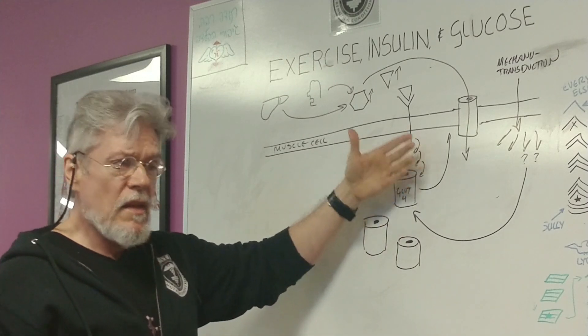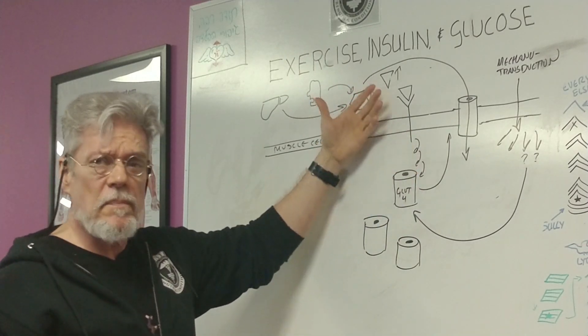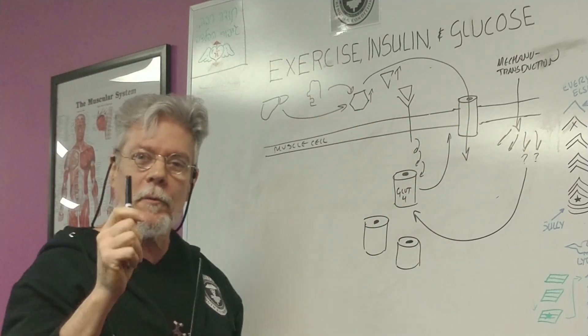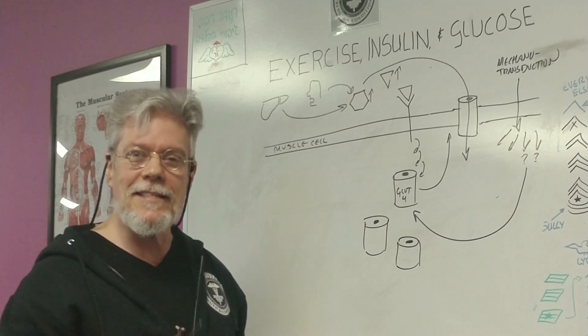You need to transport a lot of glucose. Demand for glucose by the muscle cell increases up to 50-fold during exercise. So this will make you more sensitive to mechanotransduction. But it will also make you more sensitive to insulin.